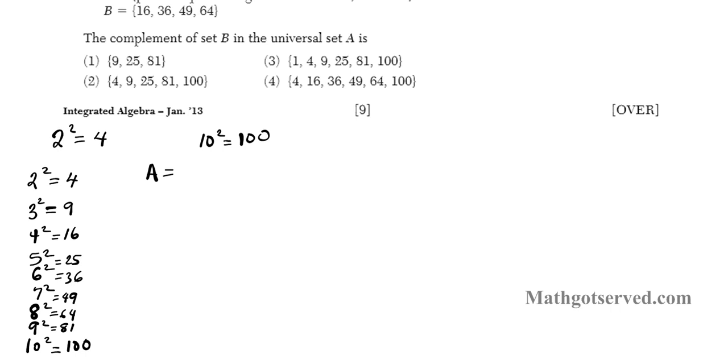So that goes set A. So let's list them. Set A is squiggly bracket 4, 9, 16, 25, 36, 49, 64, 81 and 100. So there you have it. Set B is, let's see, let's order it, 16, 36, 49 and 64. So that's set B.